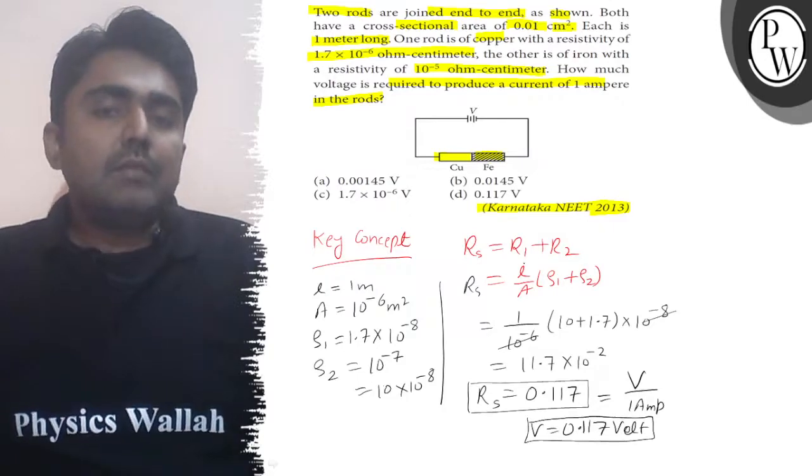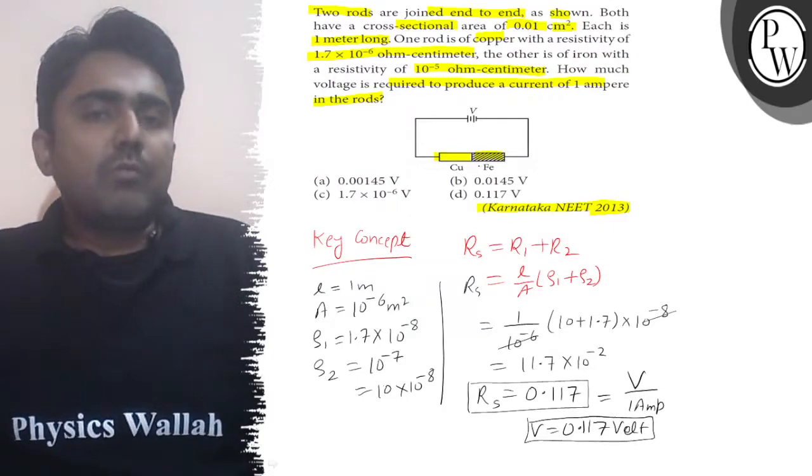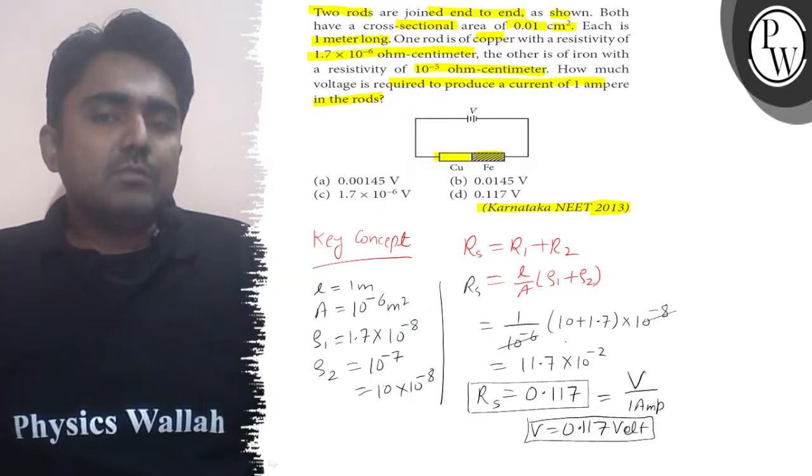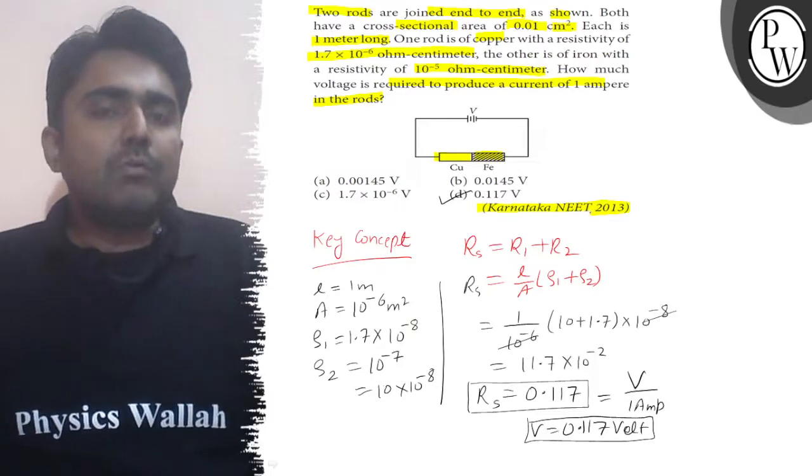To solve this question we used series combination for copper and iron. Because they are connected end to end. We managed ρ₁ and ρ₂, and from that we got the answer. So option D will be correct. Hope you understand it well. Best of luck.